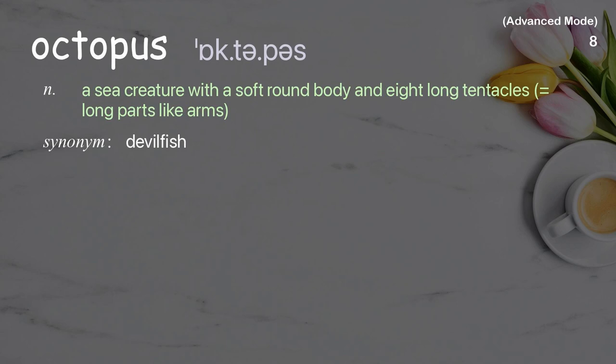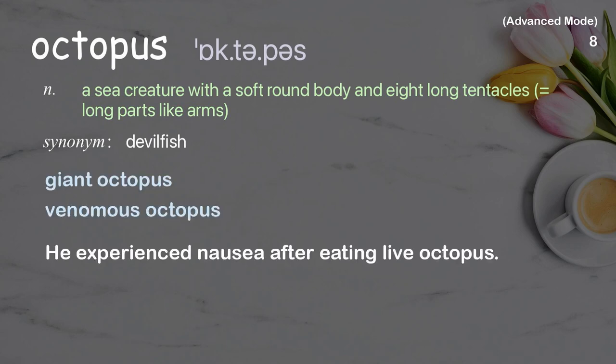Octopus: A sea creature with a soft round body and eight long tentacles. Examples: giant octopus, venomous octopus. He experienced nausea after eating live octopus.